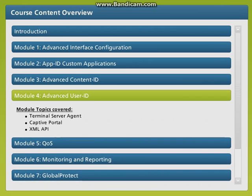In this section we will cover some of the options available for User ID, specifically the process of mapping a source IP to a user name. In Course 101 we discussed the implementation of the User ID agent. Here, we will be discussing options that do not use the User ID agent, such as the use of the terminal server agent, captive portal, and the use of XML scripting and our API.